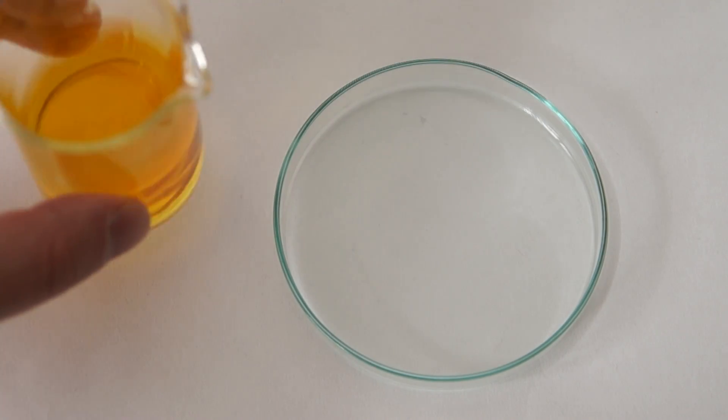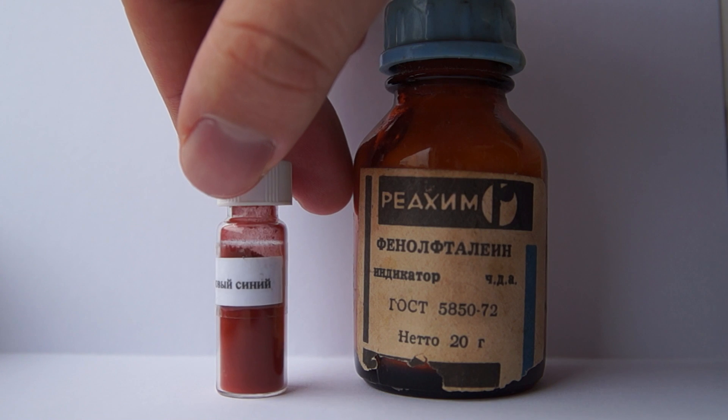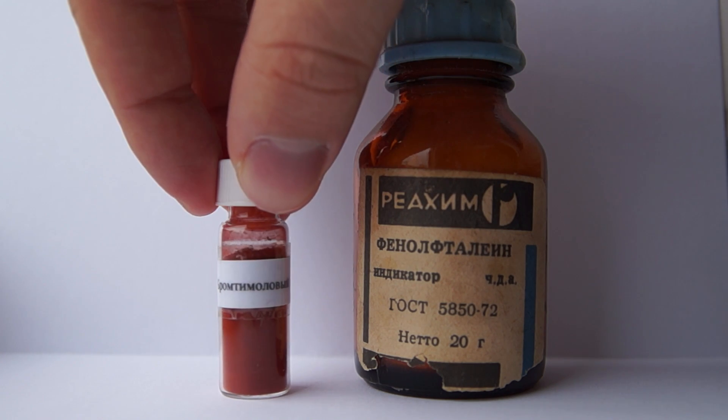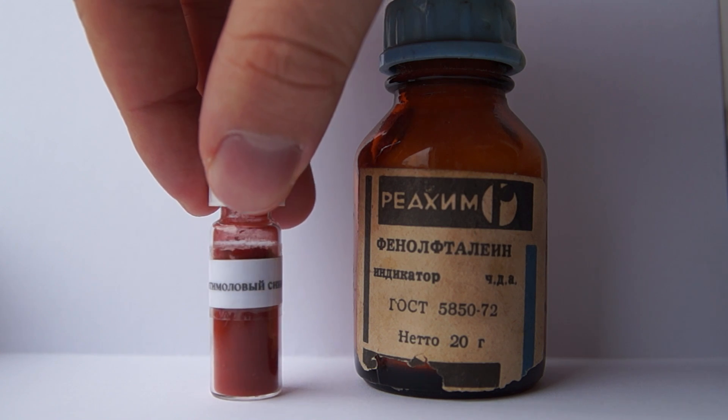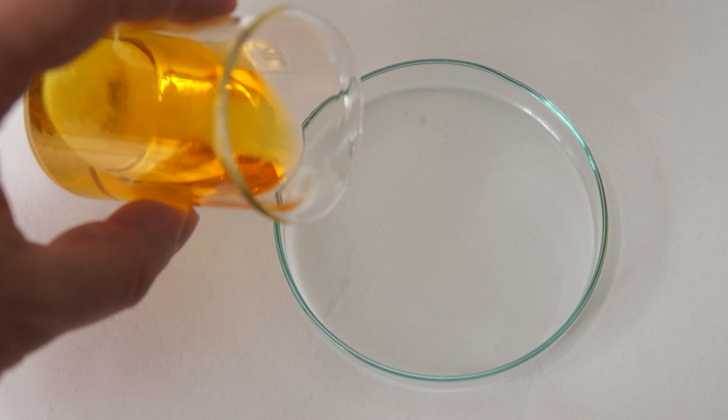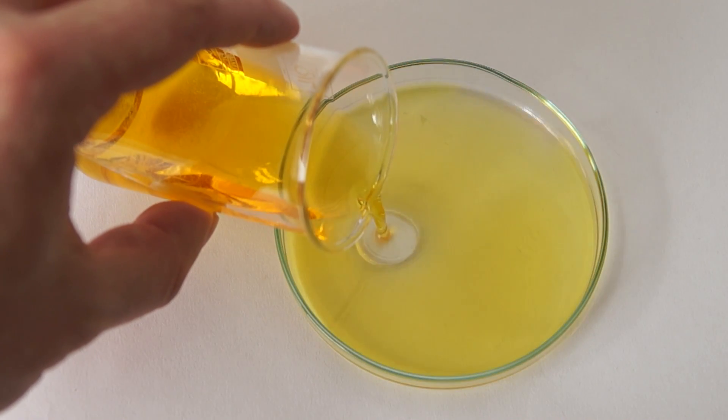To do this I took about 30 milliliters of isopropanol and added to it about five hundredths of a gram of bromothymol blue indicator and one-fifth of a gram of phenolphthalein. After that I added approximately three drops of ethanol to the mixture.